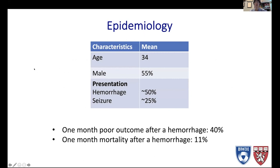Moving on to epidemiology: the average age at presentation for AVM is 34, reflecting their largely congenital nature. There is roughly equal male-female predominance, just slightly more male. Importantly, half the patients with AVMs present with hemorrhage, a quarter present with seizures, and the rest are found incidentally. The outcome after hemorrhage is quite poor, with 10% mortality and 40% poor outcome one month after hemorrhage.